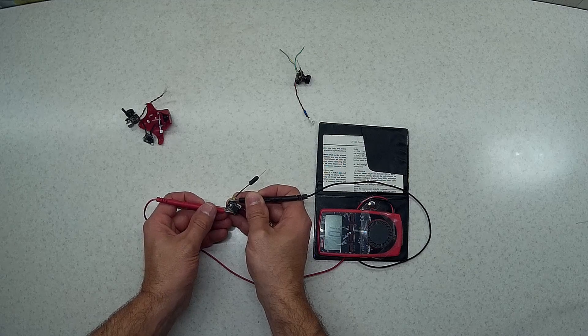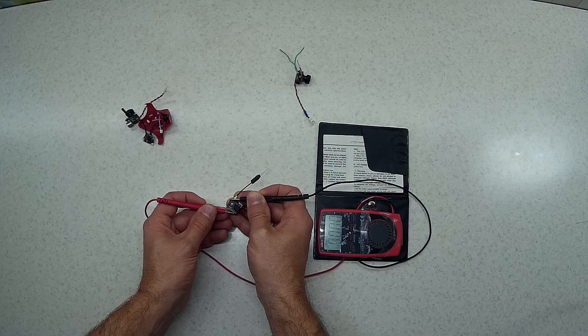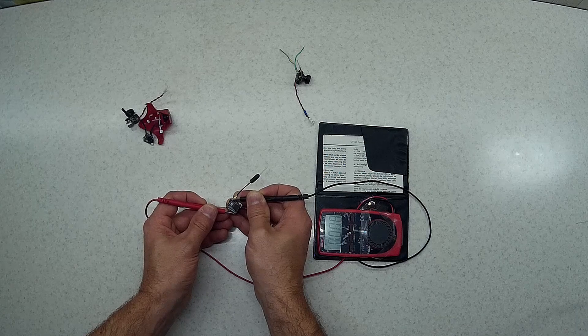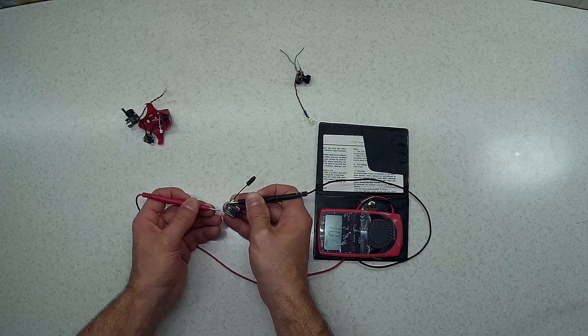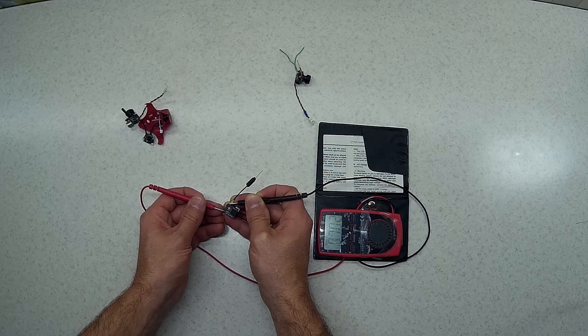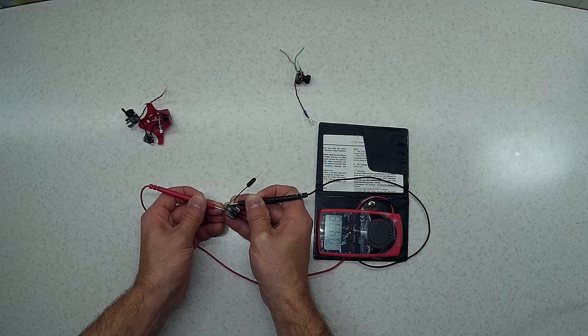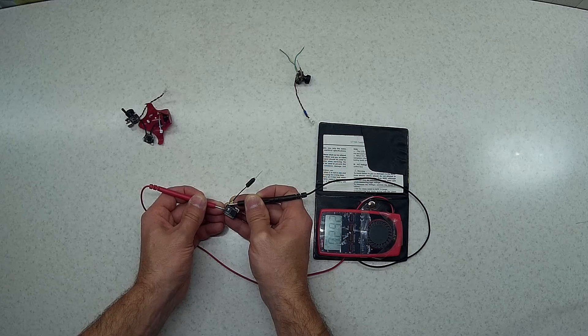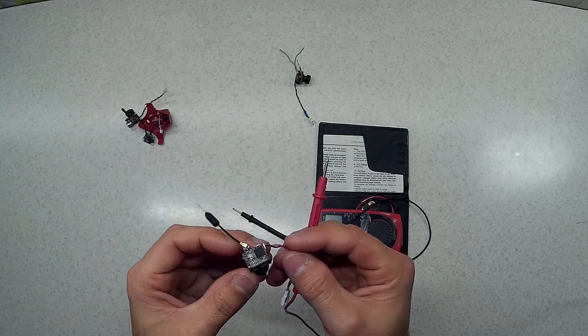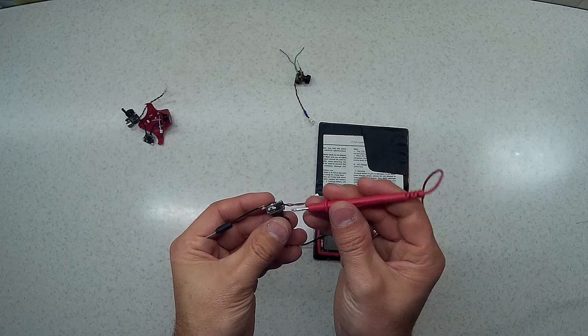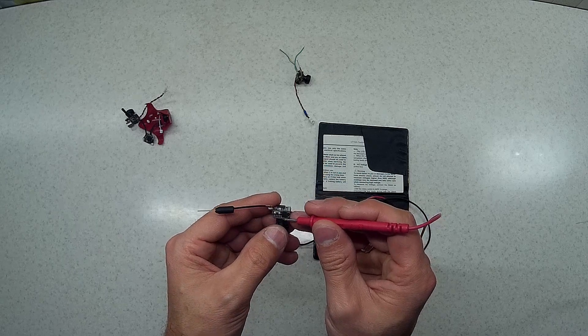Now if you try this pin we get kilo ohms. This one, zero ohms, so that's the ground. Okay, it seems like we are on good track. Kilo ohms, kilo ohms, kilo ohms, and the last one is 70 ohms. So in this case, this jumper is the video for sure.